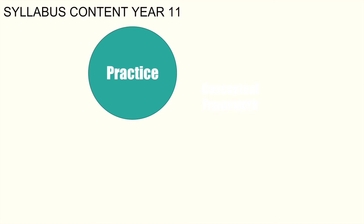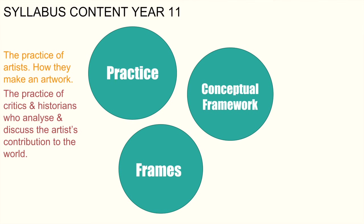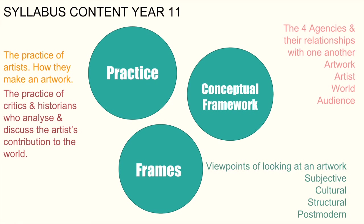In recapping very briefly the syllabus content for Year 11, we look at the three aspects of content individually: practice, conceptual framework, and the frames. In art, practice is the practice of artists and how they make their artworks, and the practice of critics and historians who analyse and discuss the artist's contribution to the world. The conceptual framework deals with the four agencies and their relationships to one another — the four agencies being artwork, artist, world, and audience. And finally, the frames, which are essentially viewpoints of looking at an artwork: subjective, cultural, structural, and postmodern.